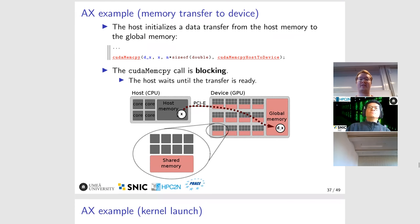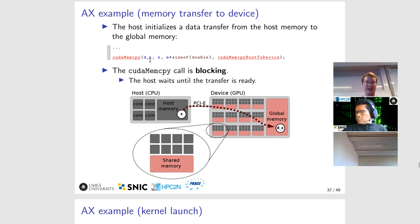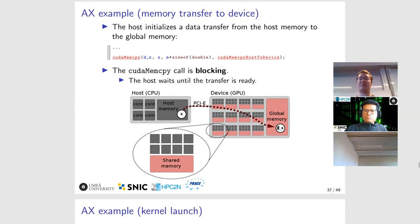Once the host has allocated host memory with malloc and initialized it, it must allocate a second buffer on the GPU called dx. CUDA provides a function called cudaMalloc that returns a pointer pointing to global memory, and you give it how many bytes to allocate — in this case n doubles. Then the host must move data from host memory into this GPU buffer dx by calling cudaMemcpy, specifying the direction as host-to-device, the number of bytes, the source (x in host memory), and the destination (dx). This is a blocking call, so when the host thread returns from this function it is guaranteed that all data has been moved to the GPU, and it would be safe to launch the kernel.